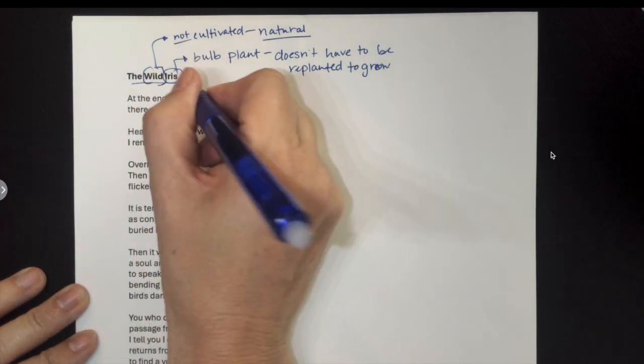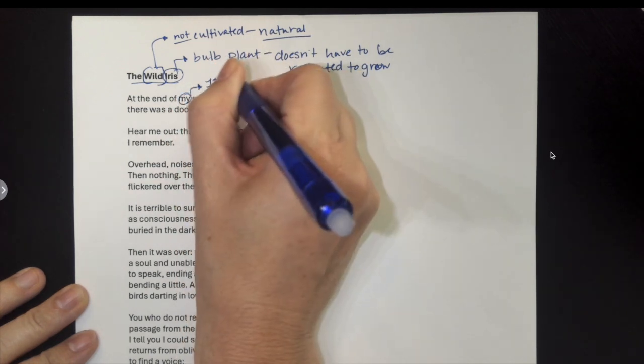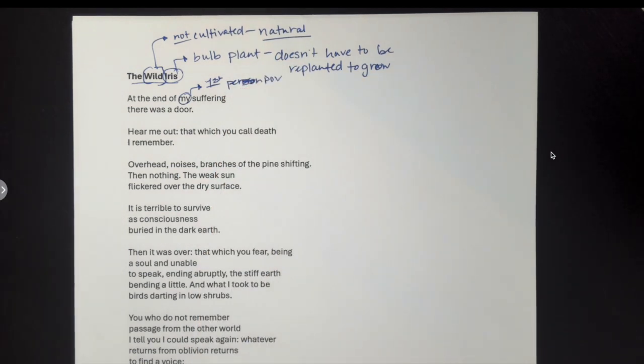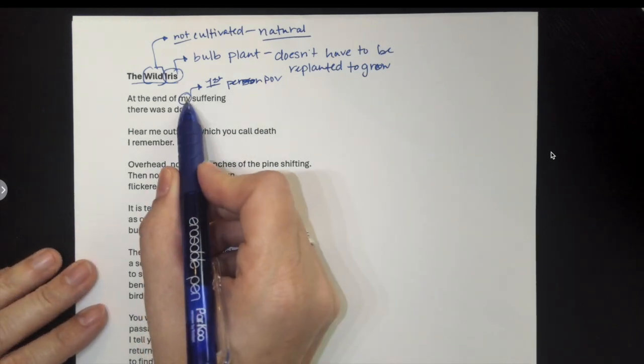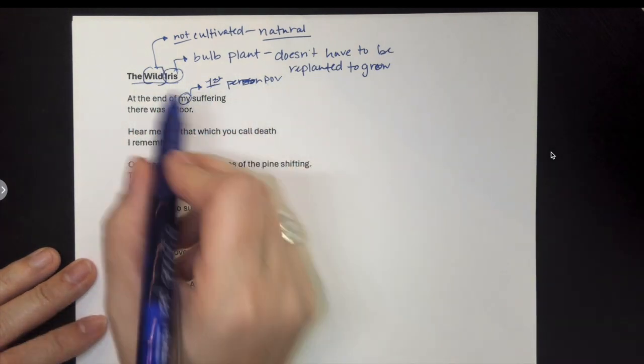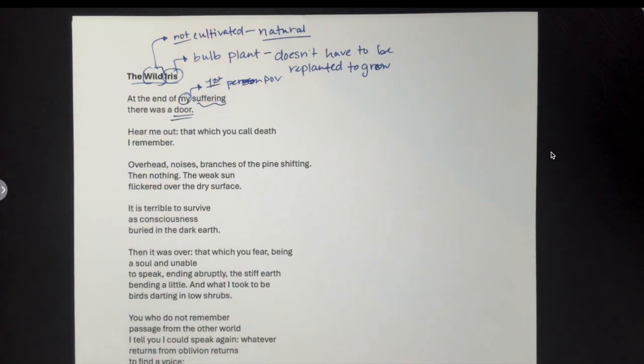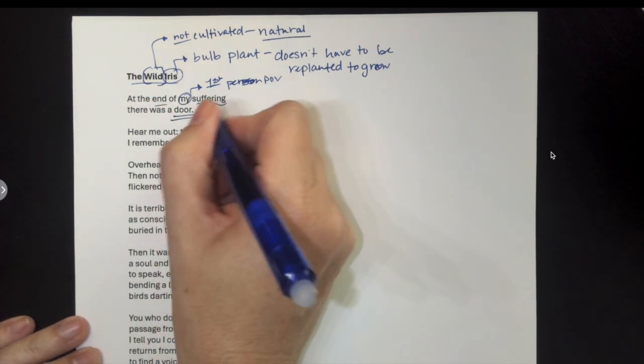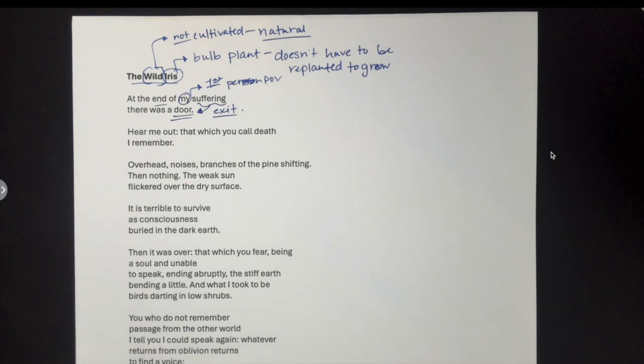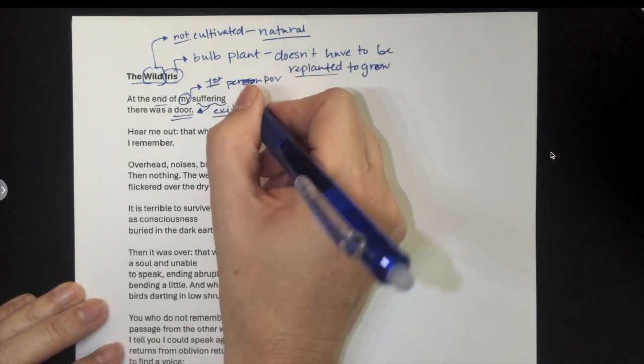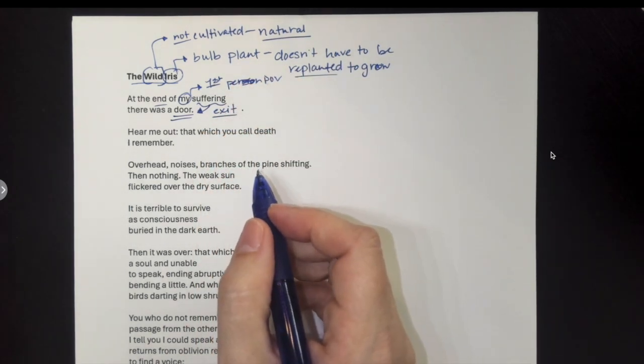When we're looking at this, the very first line tells us this first person point of view because we have that I. And so it says at the end of my suffering, there was a door, which by the way is such a good opening. Those are such great opening lines. So we have this idea of this first person point of view. We know because we have already talked about it, that this is the iris speaking to us. The thing that's interesting about this is that it implies to us as the audience that there is an end to suffering. And also this idea of a door, which is this idea of an exit. So this idea that suffering is not eternal, it's not constant. And again, that speaks to this idea of the cyclical nature of what we're thinking about.